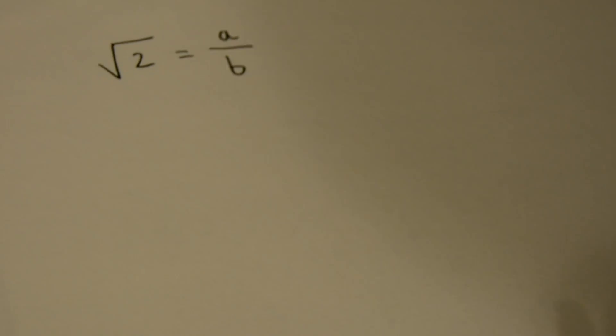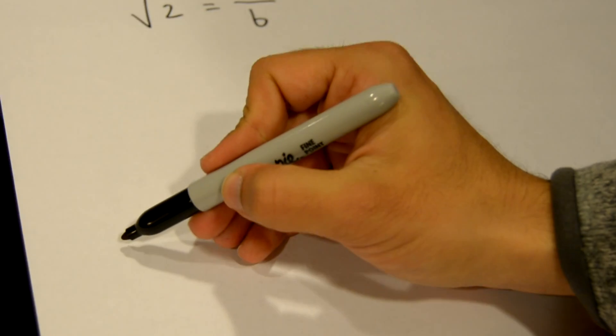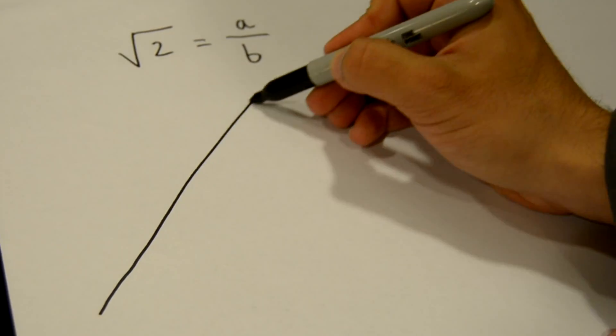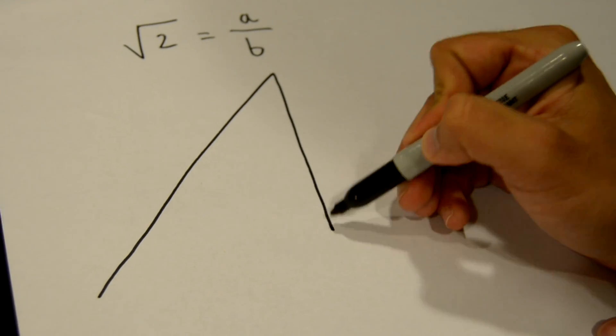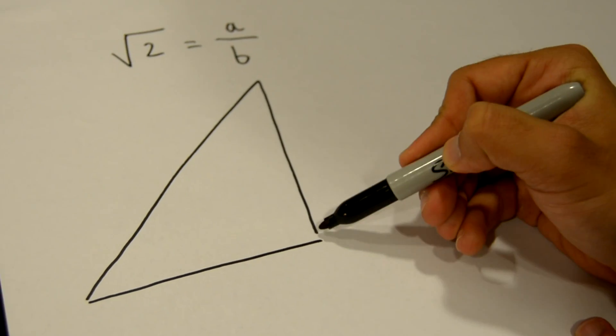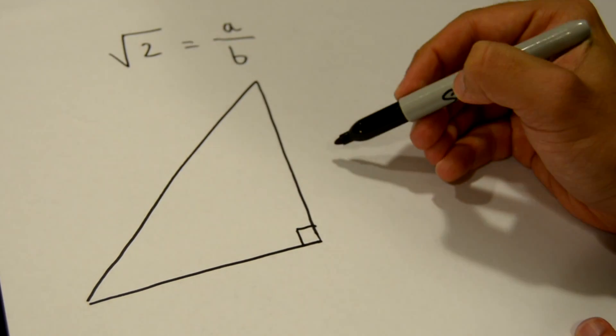Now if we draw an isosceles right triangle with side length b, something like this,